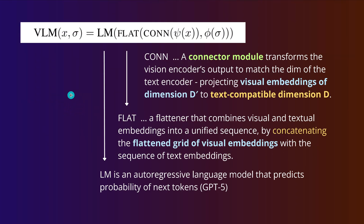The paper has a beautiful idea: what is the simplest explanation of a vision language model? At the core, a connector module transforms the vision encoder output to match the dimensionality of the text encoder, projecting visual embeddings into a text-compatible dimensional space. Then, because in vision we have grids of 16×16 or 32×32 pixels, you also flatten — combining the visual and textual embeddings into a unified linear sequence, since our LLMs are linear models.